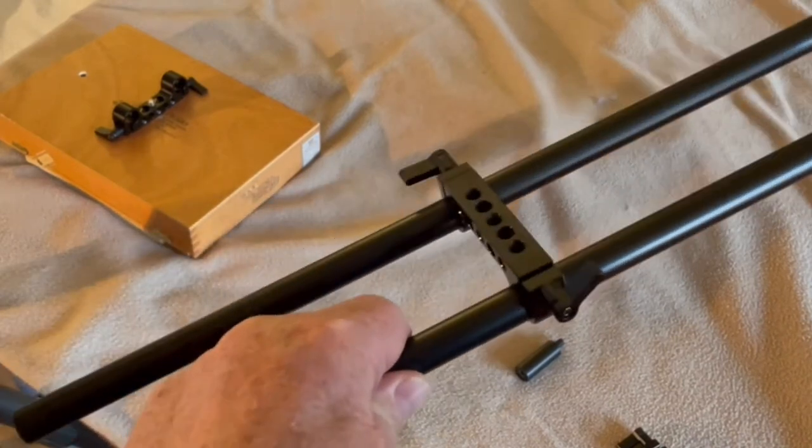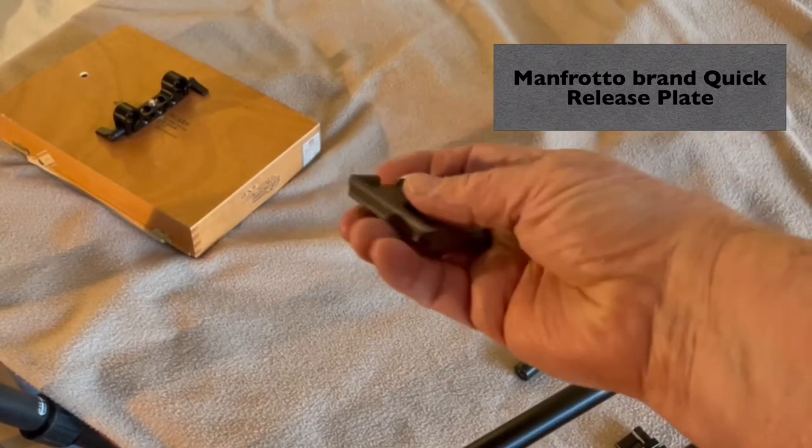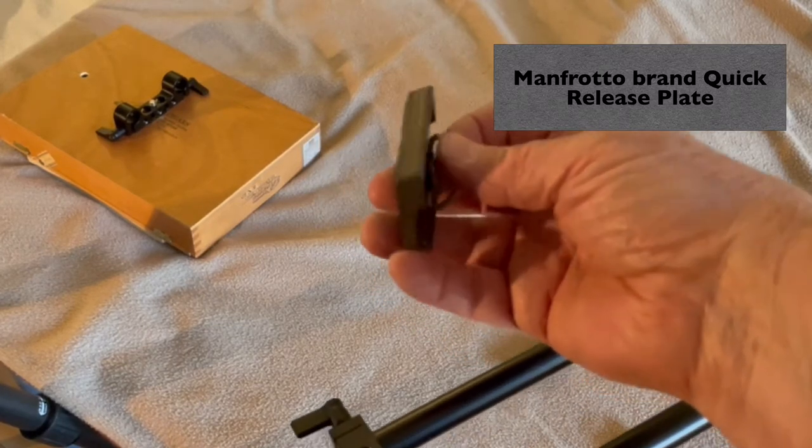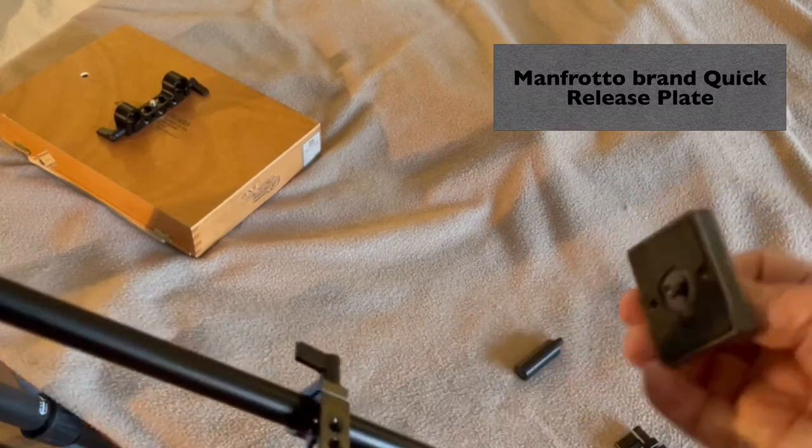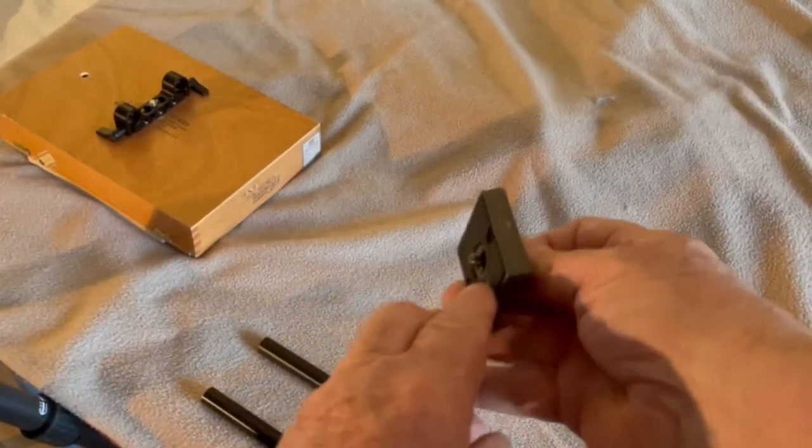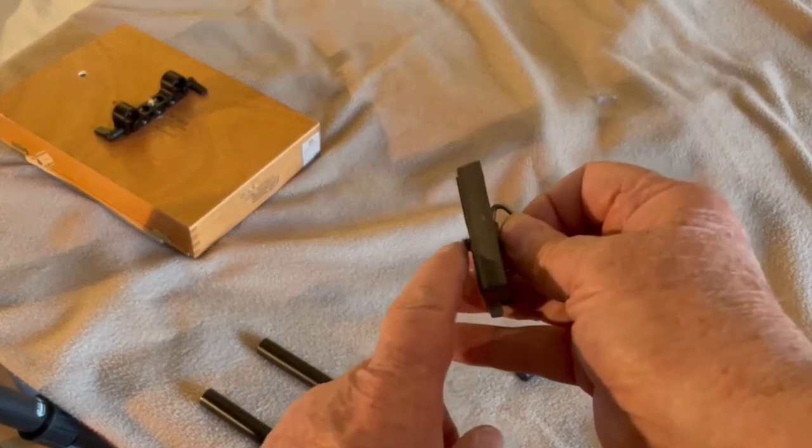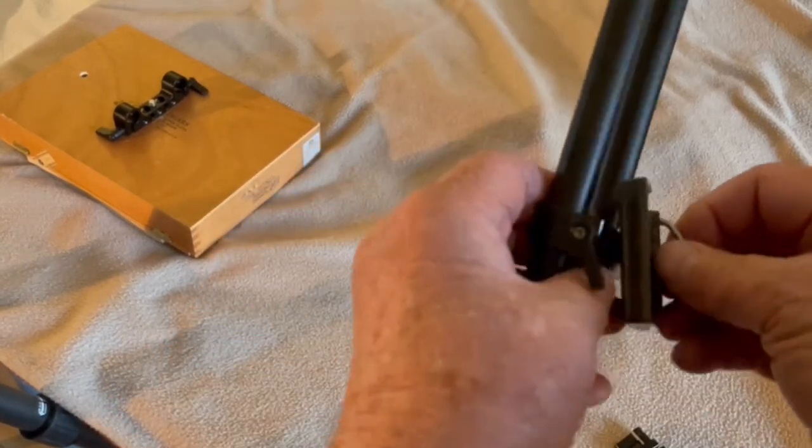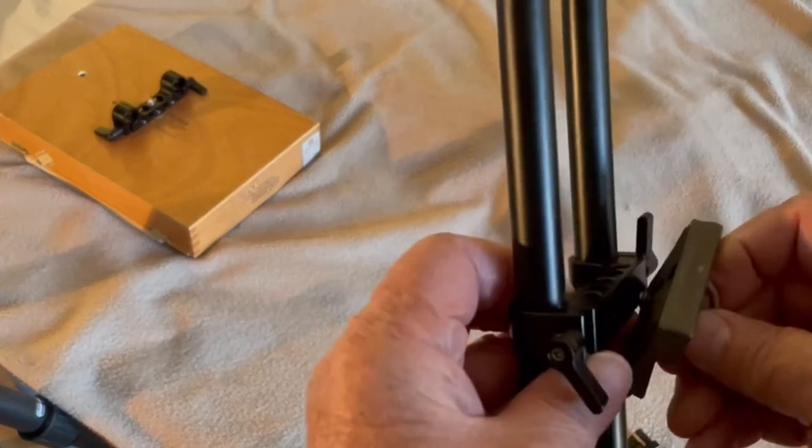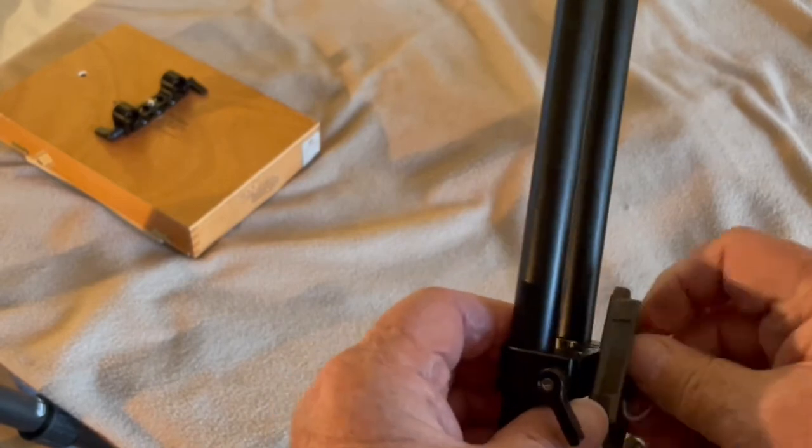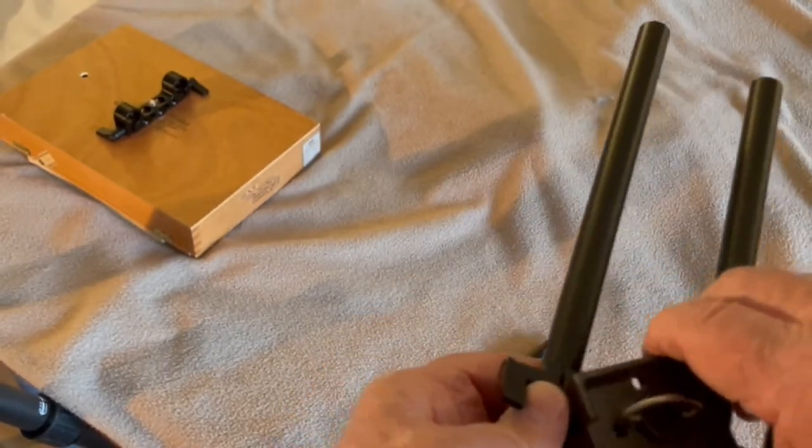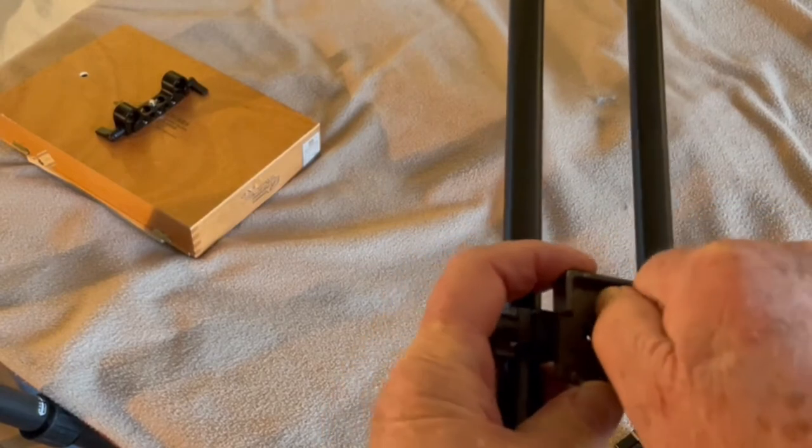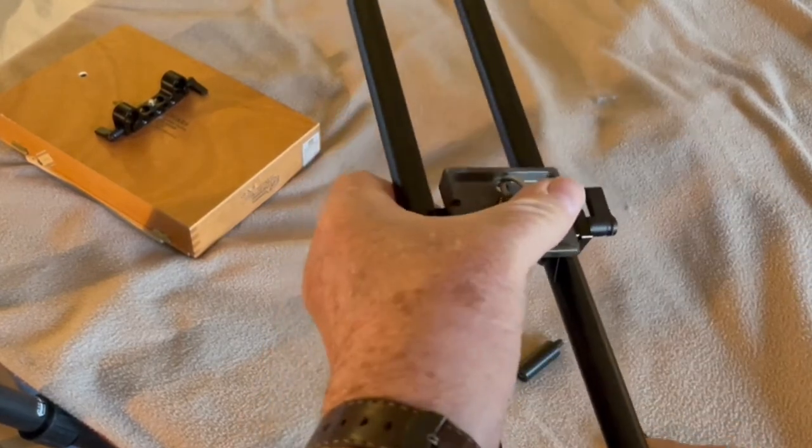What I have done is taken a standard quick-release plate from Manfrotto with its one-quarter-twenty threaded stud right there. I have put that in the middle of this rod clamp like so, tightening it down so that it is tight onto the rod clamp like that.